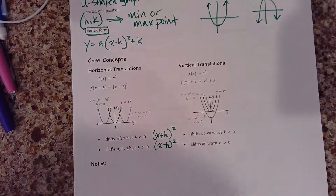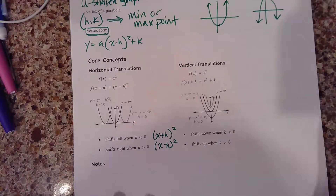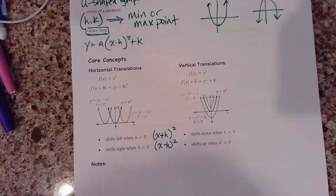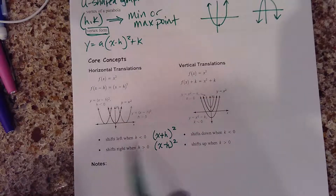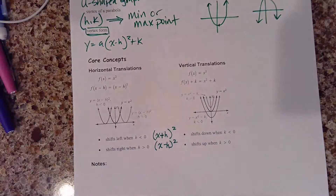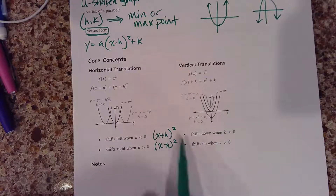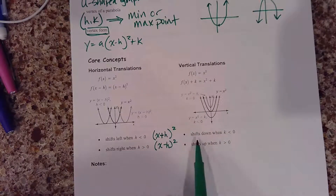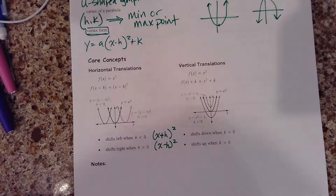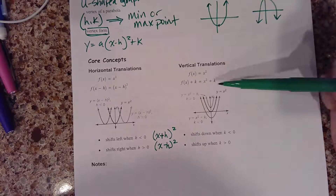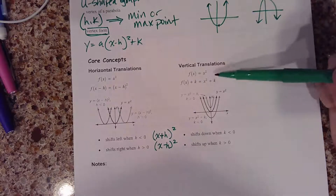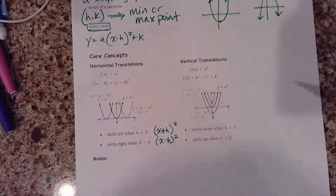Just be careful that you're correctly identifying whether the H value is negative or positive. It follows the rules: it shifts left when H is less than zero, and shifts right when H is greater than zero. Shifting up and down is pretty basic — K less than zero shifts down, K greater than zero shifts up. K is that number being added to your entire function at the end.